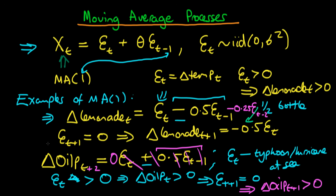In a moving average process, the effect of an error propagates over two periods: it has an effect in the period it occurs and then in the period after. For lemonade, an increase in temperature raised demand in that period but decreased it relatively in the next. For oil prices, a hurricane increased prices in that period and the next, but after supply recovered, prices stabilized. These are not the most realistic examples but they illustrate the concept of a moving average process.